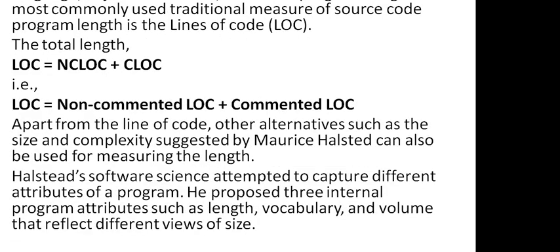The third important aspect of length is code. Code is currently written in different ways such as procedural language, object orientation, and visual programming. The line of code is measured using the formula: LOC = NCLOC + CLOC, where NCLOC is the non-commented lines of code in the source code and CLOC is the commented lines of code. The source code consists of two types: statements or instructions required to produce the desired output, and commented lines that describe the instructions.